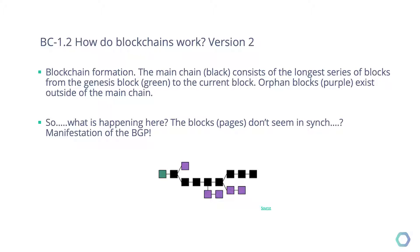We need to pick one. How does this translate to a blockchain? The node can only follow one blockchain, so the node needs to pick whether to go with the purple block or the black block. The first thing the node will do, of course, is check: is this block valid?